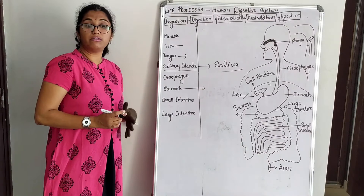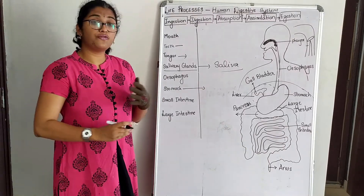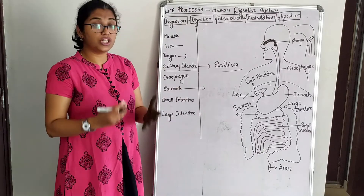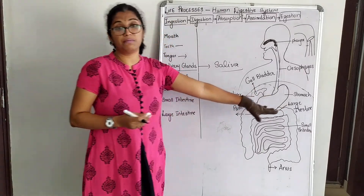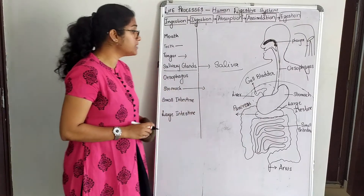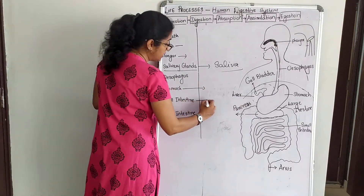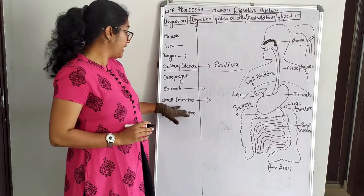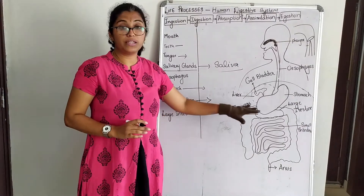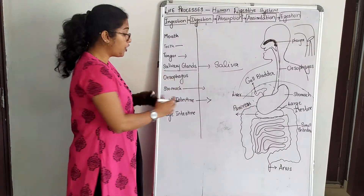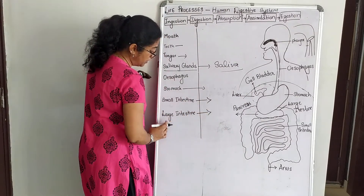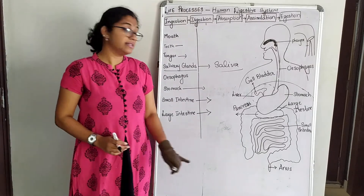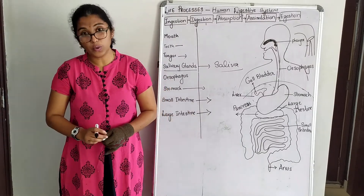In the stomach, the food remains for about 3 to 4 hours, where it is further broken down into smaller pieces, churned, and stored. From the stomach, the food moves to the small intestine. From the small intestine, the undigested food moves to the large intestine, and from the large intestine it is expelled out through the anus.